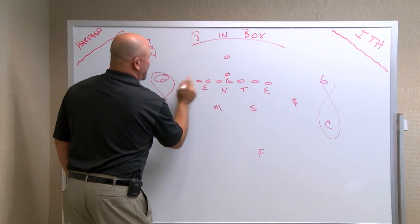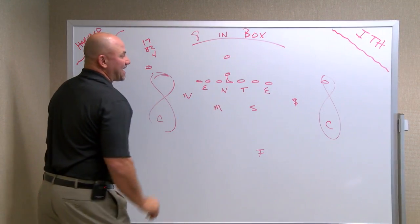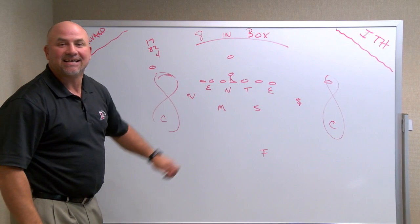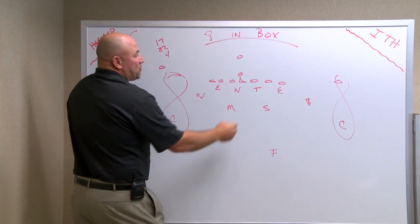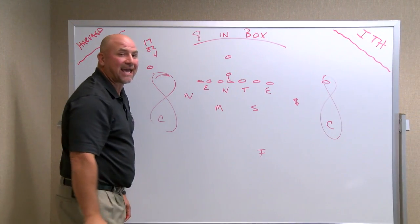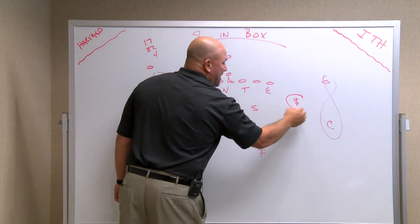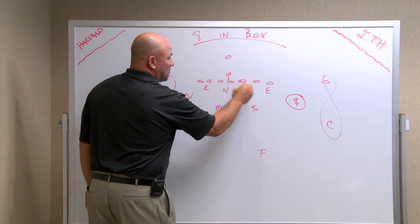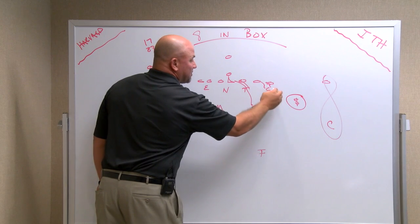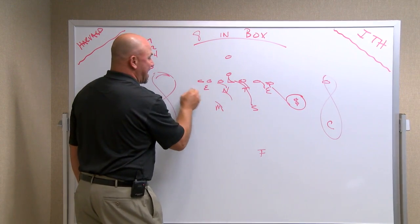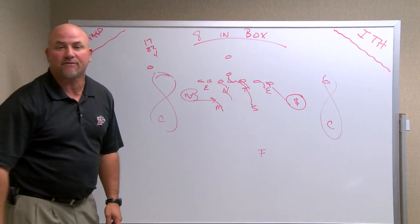If we go to two tight ends, one back in the backfield, they will stay in the 8-man front. And why do they do that? Because you have 7 to block 8. And when they can get an extra man in the box, whether they try to double up here, double there, they're going to get an extra man and you have an extra man flying to the football.